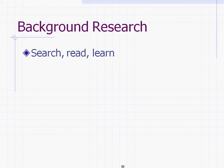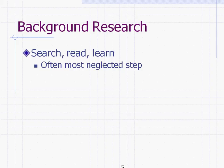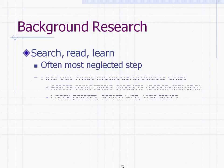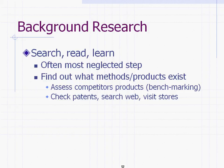The next step is background research. This is where you search, read, and learn. Often this is a neglected step — sometimes the most neglected step — because it forces you to read, and many people don't want to read. This is where you find out what methods or products already exist, assessing competitors' products. This is called benchmarking. So if you're designing a flapjack flipper or a kid bouncer, you want to look at other companies that make those products and see what is out there. You don't want to try to reproduce something that's already there, so you'll check patents, search the web, and even visit stores.